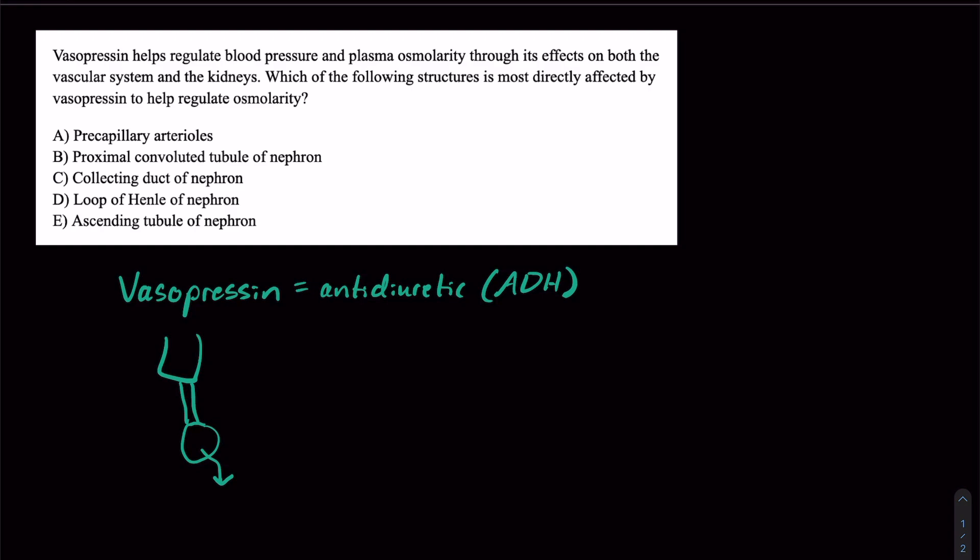Now vasopressin has two major functions, and it corresponds to two different receptors. So we have V1 and V2. V2 is all about the kidney.